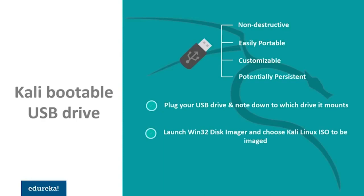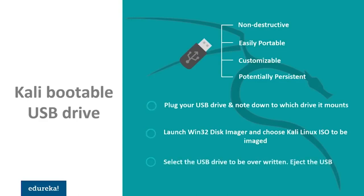In the software, you'll have to choose the Kali Linux ISO file that needs to be imaged and verify that the USB drive to be overwritten is the correct one. Lastly, once the imaging is complete, you need to safely eject the USB drive from the Windows machine. So like I said, it's very simple. I'm not going to show you a demo on this one because it's very easy and I'm sure you guys can pull it off. If you have any doubts, you can post them in the comment section and we'll get back to you.